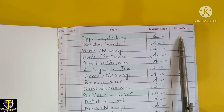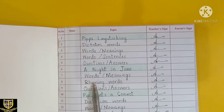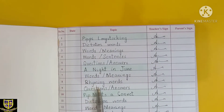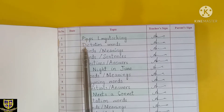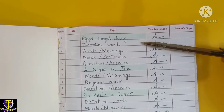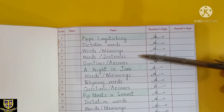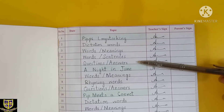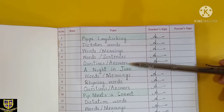Here the parents have to sign — this portion is for parents to fill in. In this area you have to fill in the name of the chapter. In every chapter you have topics. First you have dictation words, then word meanings, then word sentences, and last are question answers.